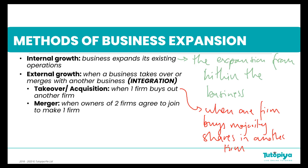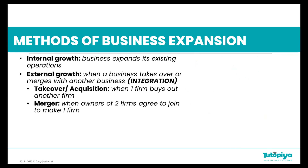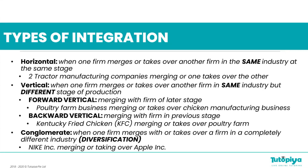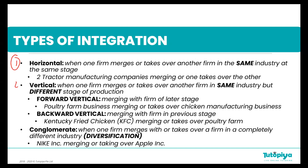A merger is when two firms come together and join to become one business. Now let's take a look at the types of integration. We have three different types: horizontal integration, vertical, which has two subsets we'll discuss, and conglomerate integration. Horizontal happens when one firm merges with or takes over another firm that's in the same industry at the same stage of production.